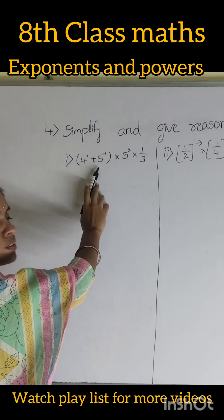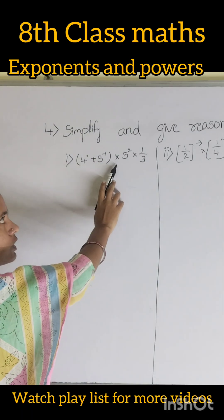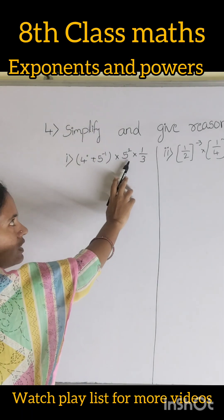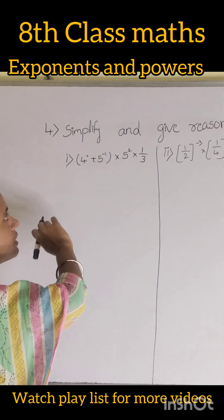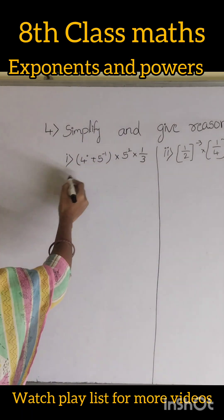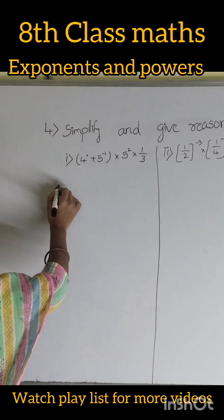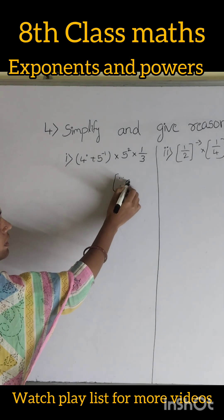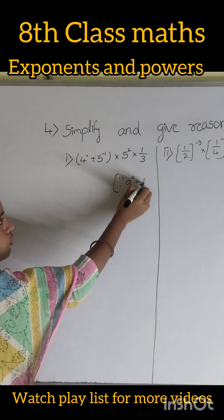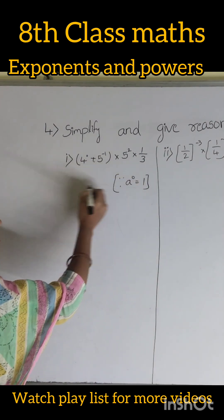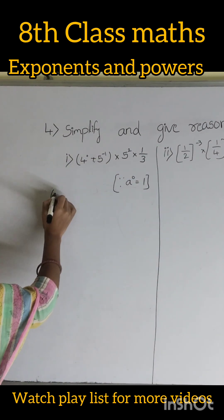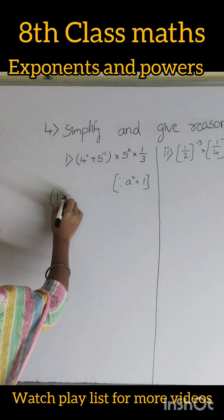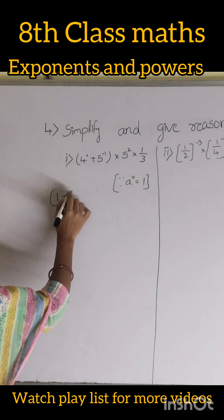Question 4: 4 power 0 plus 5 power minus 1 into 5 square into 1 by 3. Here, 4 power 0 means 1, because a power 0 equals to 1, so 4 power 0 equals 1.